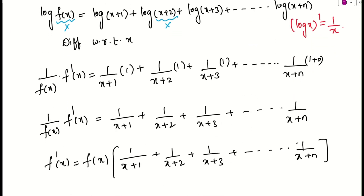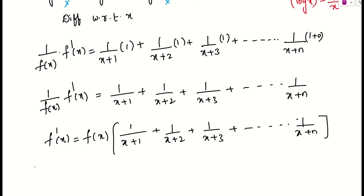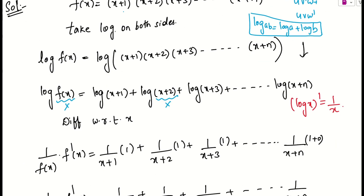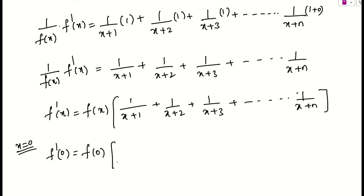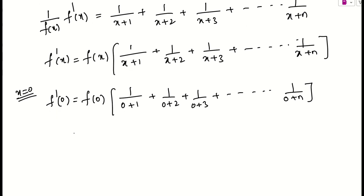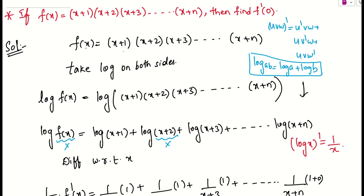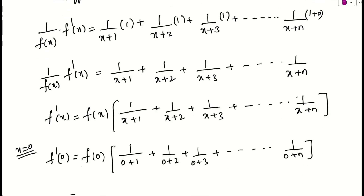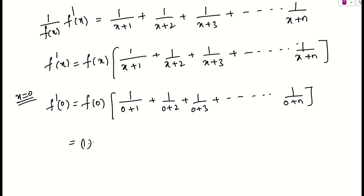The problem is asking for f'(0), so we simply substitute x = 0. First, f(0) = (0+1)(0+2)(0+3)···(0+n) = 1·2·3···n, which is n factorial. And substituting x = 0 in the bracket: 1/(0+1) + 1/(0+2) + 1/(0+3) + ... + 1/(0+n) = 1/1 + 1/2 + 1/3 + ... + 1/n.